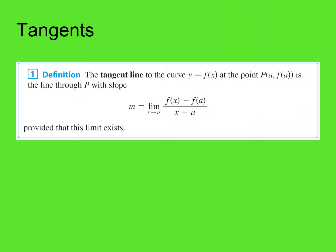So here is our definition: the tangent line to the curve y = f(x) at a point P is the line through P with slope m, defined as the limit as x approaches a of the difference quotient [f(x) - f(a)] / (x - a), provided that the limit exists.